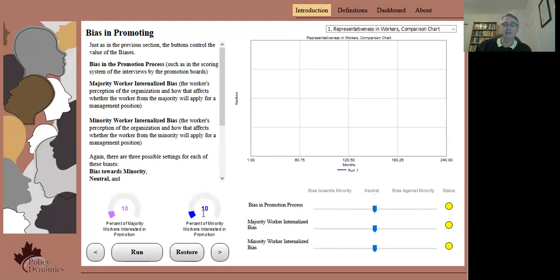Second, there is a type of internalized bias based on the current level of diversity in your organization. This could be based on the perception of applicants seeking a job or a promotion, on the likelihood of success if they apply, or it could be based on a perception of the amount of inclusiveness in your organization if they are hired or promoted. There are three options for this type of internalized bias.